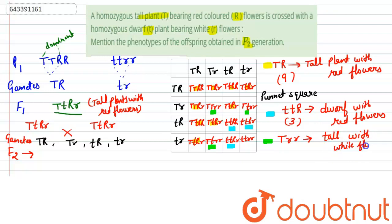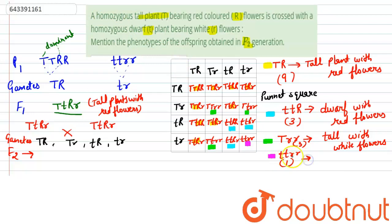The last condition is small t small r — homozygous recessive in both characters. There are three progenies with small t small t capital R small r, and one progeny that is homozygous recessive in both. This progeny, highlighted in pink, is one in number. The plant will be dwarf and with white flowers.